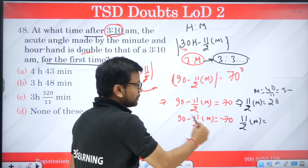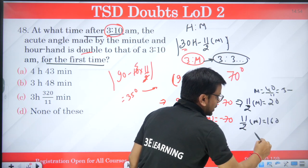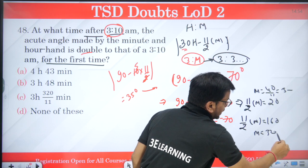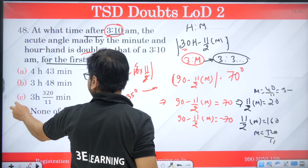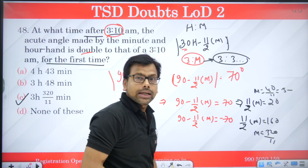So 11 by 2 m becomes, minus 70 comes here is 160, so the m becomes 320 by 11 after 3 o'clock. So answer of our question is option number C. This is my answer.